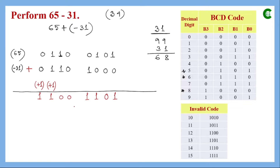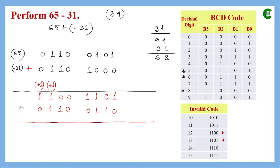We perform the BCD addition and check the result for validity. We find 1101, which is invalid in BCD code, and 1100, which is also invalid. In BCD addition, when a result is invalid we add 6 (which is 0110 in BCD). So we add 0110 to both invalid digits and perform another round of BCD addition.